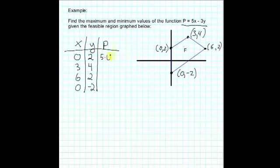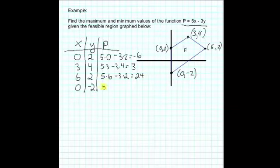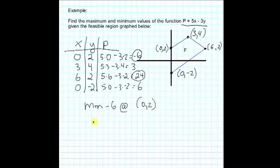So now we can calculate P by substituting in. So here we have 5 times 0, minus 3 times 2, we get negative 6. Here we have 5 times 3, minus 3 times 4, that's 15 minus 12, we get 3. Here we have 5 times 6, minus 3 times 2, 30 minus 6 is 24. And finally, 5 times 0, minus 3 times negative 2, is a positive 6. Now we can compare our P values and find the max and min. Here we see we have a minimum and the maximum. So for our function, we have the minimum is negative 6 at the point 0, 2, and maximum is 24 at 6, 2.